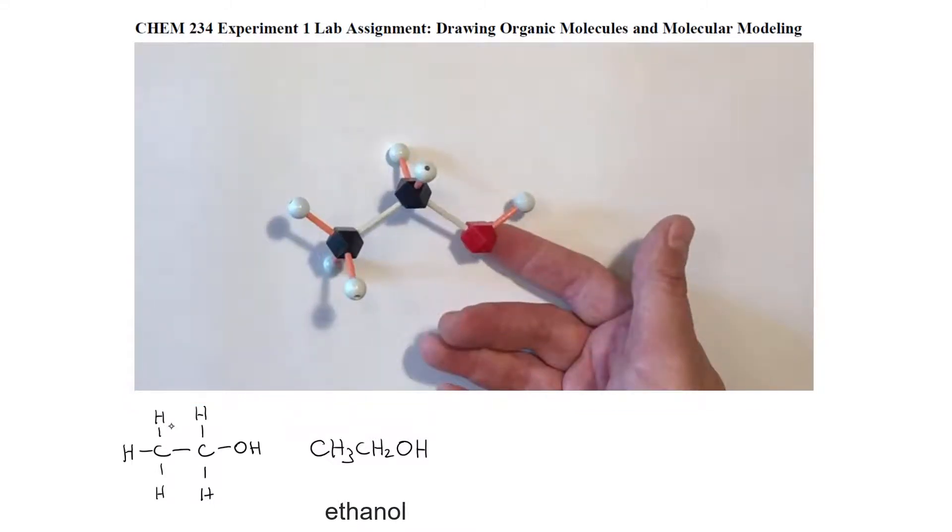To translate that into a skeletal structure, you just have to remember that carbon is assumed to exist at the ends of unlabeled lines and at kinks in the structure. Hydrogen atoms aren't drawn in on any of the unlabeled carbons, but you do need to draw the hydrogen in on the oxygen and any atoms that are labeled.